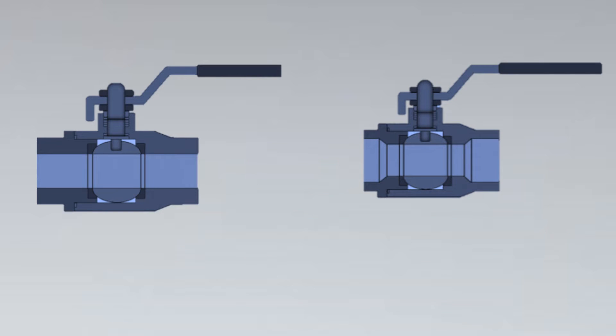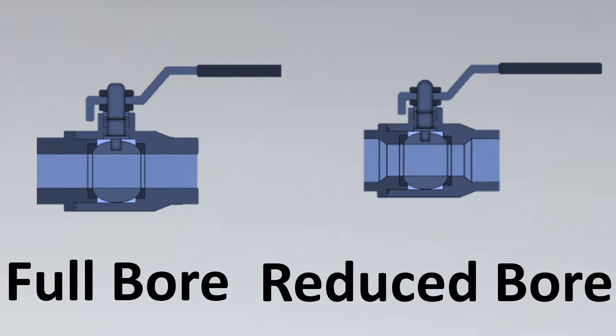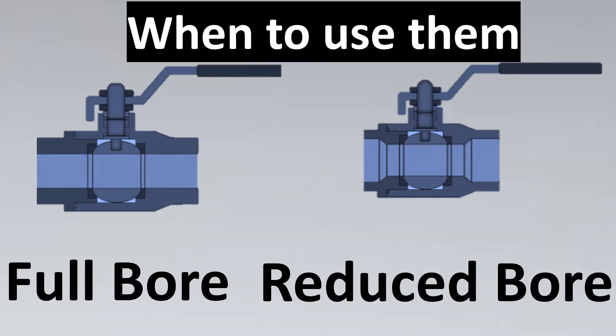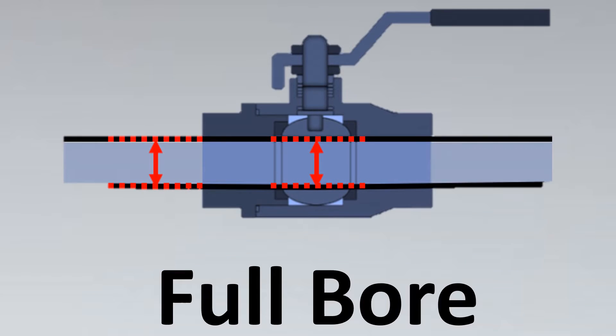Welcome and let's get started with this video about full bore and reduced bore valves, and especially when to use them. A full bore valve basically has a length, which is the valve ID, that is the inner diameter through which fluid can pass, and this distance is the same as the line ID, which is the inner diameter of the pipe. So basically, the flow has no restriction passing through a full bore valve.